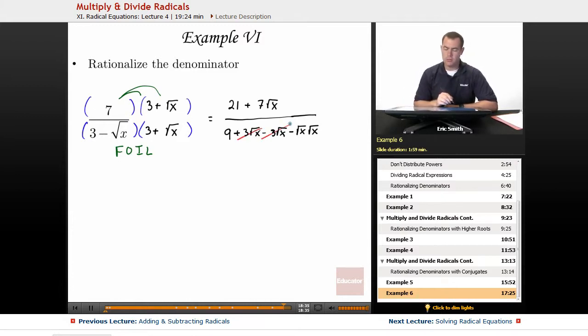Plus square root and minus square root, those two will take care of each other. And then my square root of x times the square root of x will give me just an x. This will finally leave us with 21 plus 7 square root of x all over 9 minus x.